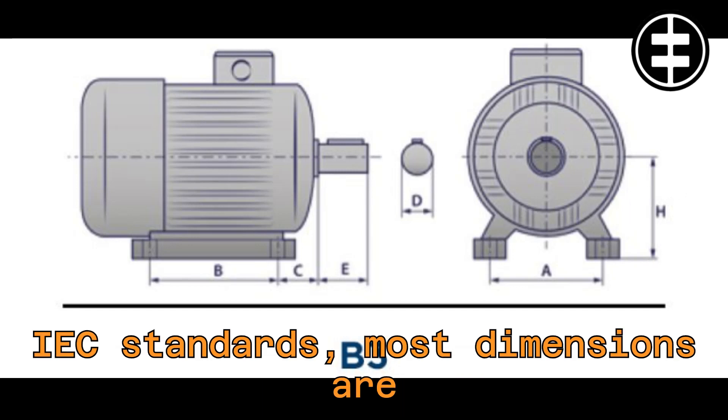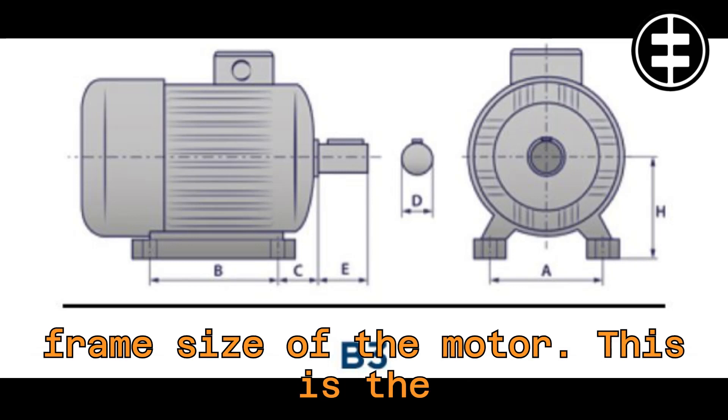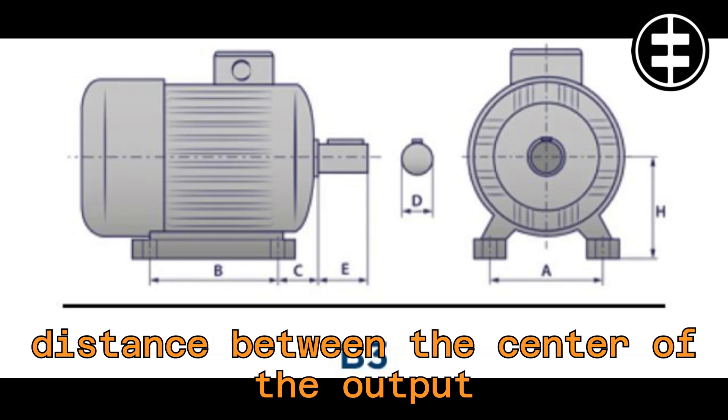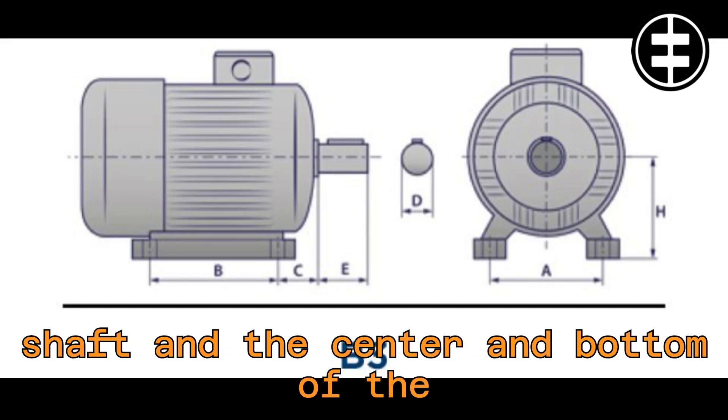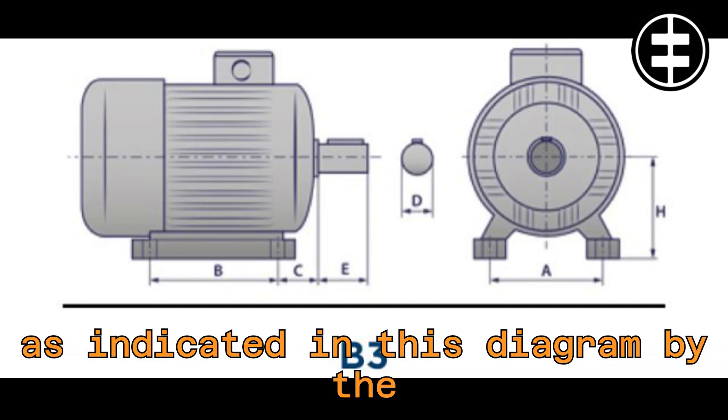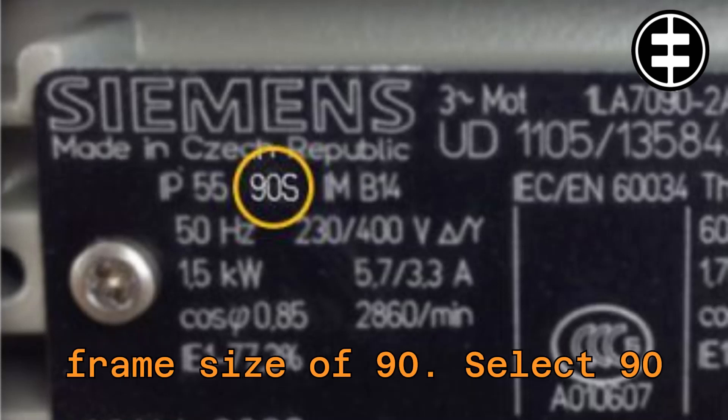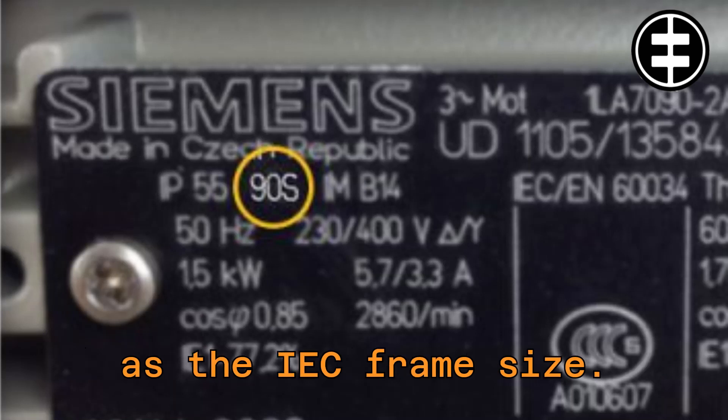For electric motors adhering to IEC standards, most dimensions are directly related to the shaft height or frame size of the motor. This is the distance between the center of the output shaft and the center and bottom of the feet of a B3 style motor, as indicated in this diagram by the letter H. In our example, the electric motor has a frame size of 90. Select 90 as the IEC frame size.